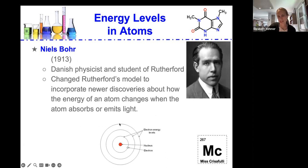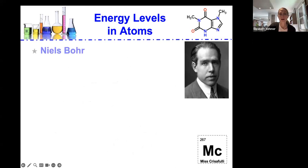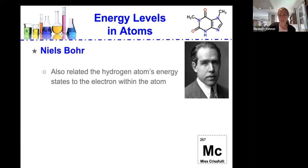So we start to see this idea of electrons orbiting the nucleus but in different levels, and we'll talk about what that means. He proposed that an electron is found only in a specific circular path or orbit around the nucleus. He also related the hydrogen atom's energy states to the electron within the atom.